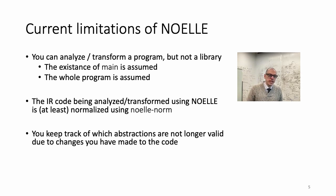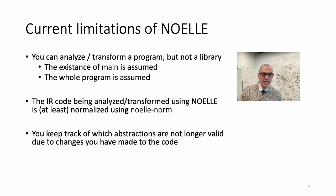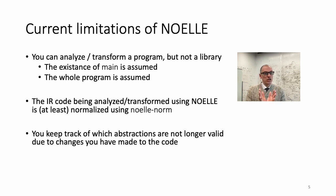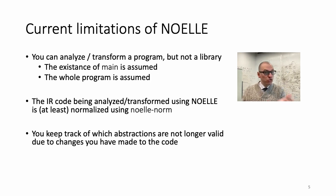Another limitation is that you, as a user of NOEL, are responsible for keeping track of the abstractions you asked NOEL for in the past that are no longer valid — because you may have changed the code and the abstractions no longer match the current state. You are in charge to decide when that invalidation happens, and therefore when to destroy the abstraction and ask NOEL to build a new one.